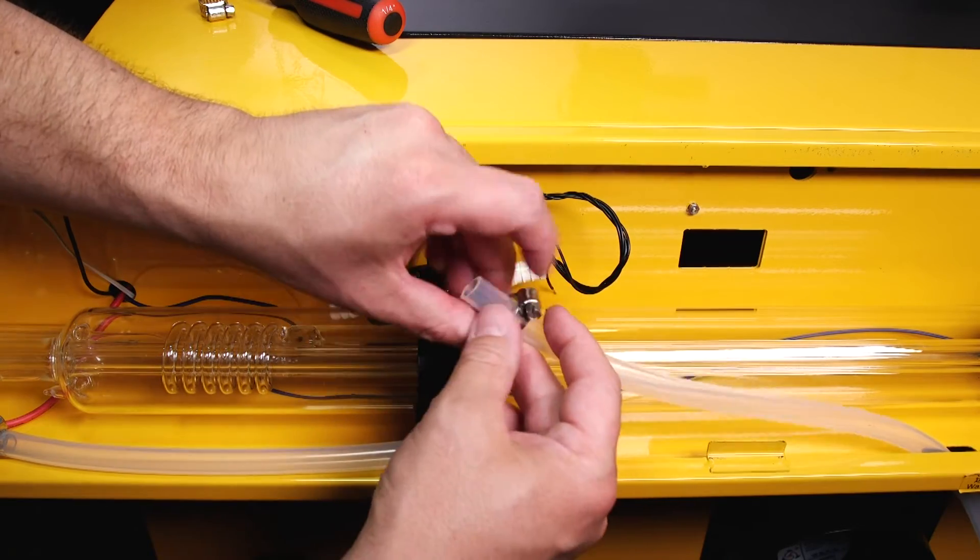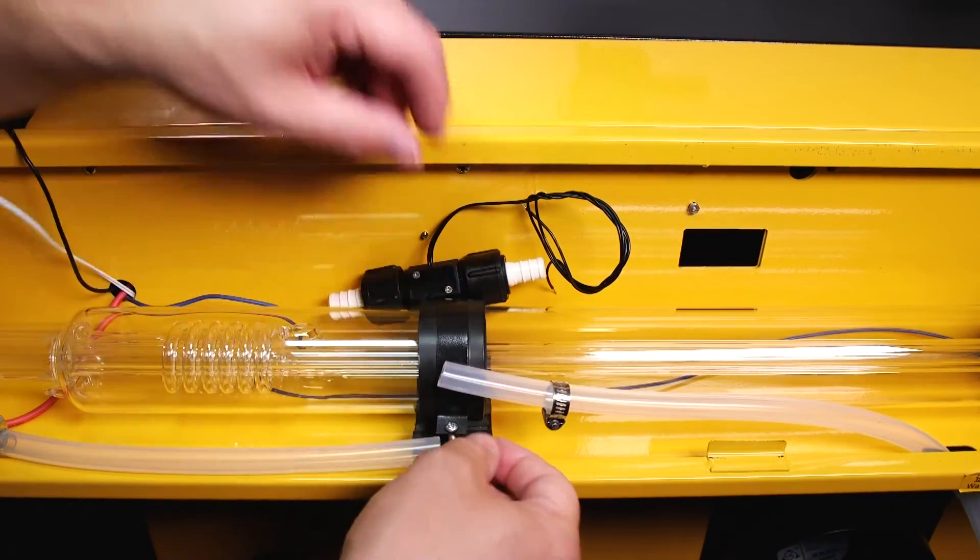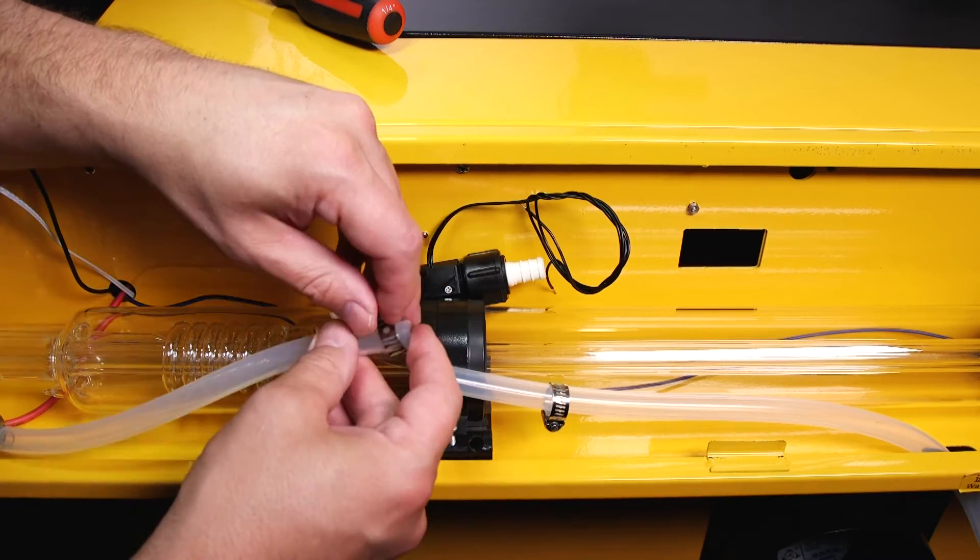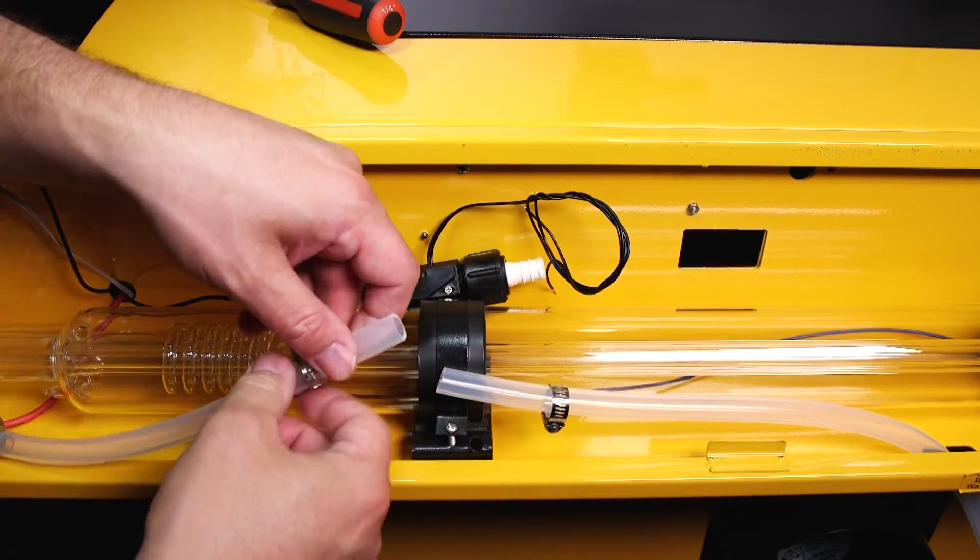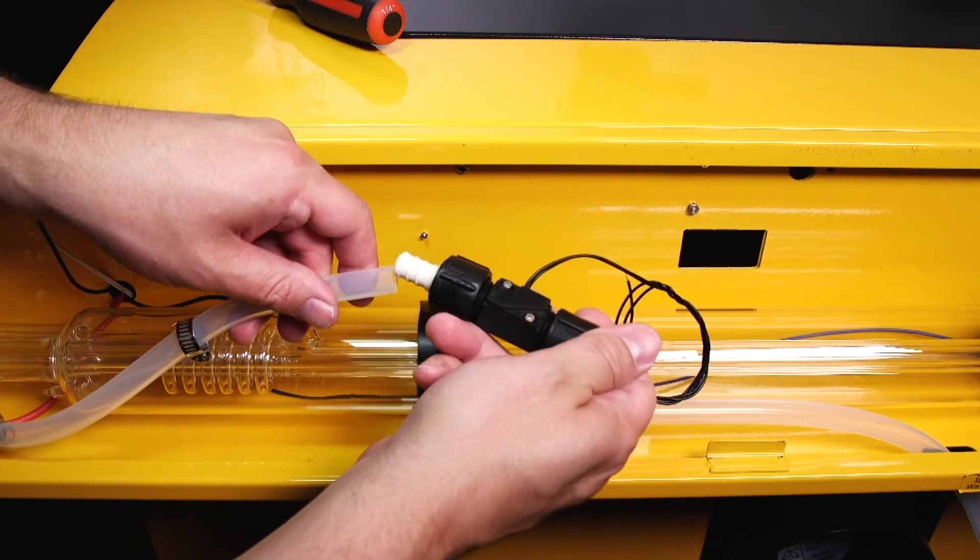Now that I have the water flow switch sitting in the right direction I'm going to attach the hoses to either side of it and I'm going to secure these hoses onto the water flow switch using hose clamps.